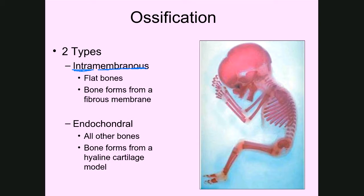Intramembranous ossification is the primary way that flat bones in the body are formed. A couple of good examples are the clavicles, or collar bones, which are an example of flat bones primarily formed through intramembranous ossification. In addition, the skull bones — if you look at the skull in the fetus here — are also considered flat bones, and they form primarily through intramembranous ossification as well.